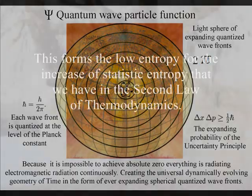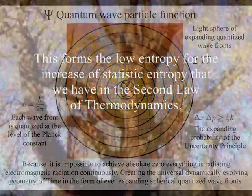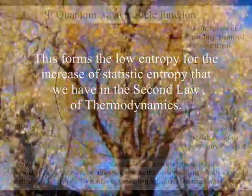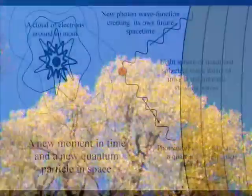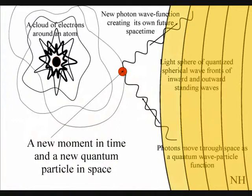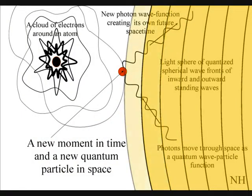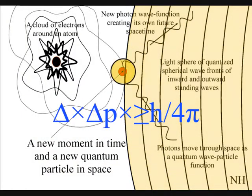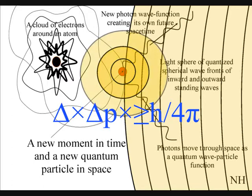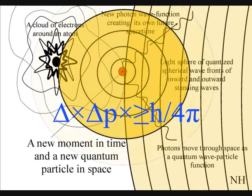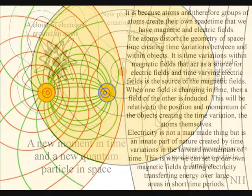In quantum atom theory, the atoms interact with light waves of electromagnetic radiation, continuously collapsing the quantum wave particle function, forming photons that form electrical charge and, in turn, form electromagnetic fields in three dimensions. This forms the local space-time geometry.